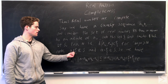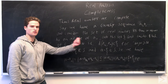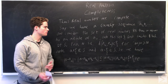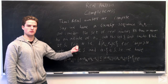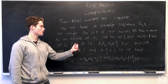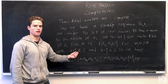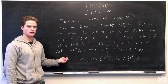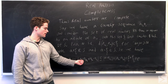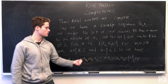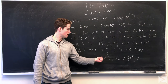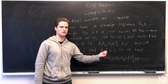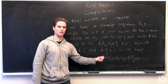We note that A plus epsilon over 2 is not in S, since A is the least upper bound, and A minus epsilon over 2 is in S. With an appropriate choice of M, we note that the absolute value of A minus A_n equals |A minus A_M plus A_M minus A_n|, which is less than or equal to |A minus A_M| plus |A_M minus A_n|. We choose M so that the distance A_M to A_n is less than epsilon over 2, and the distance from A_M to A is also less than epsilon over 2.